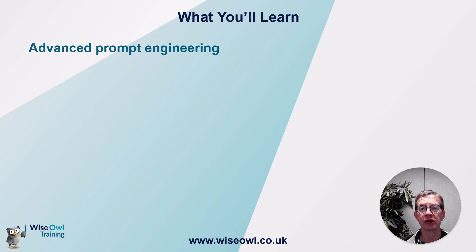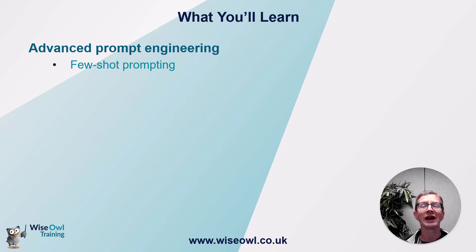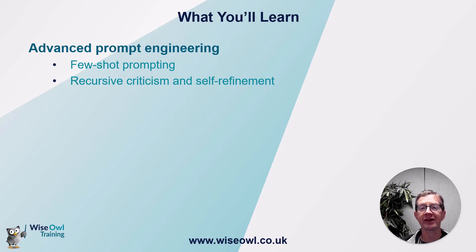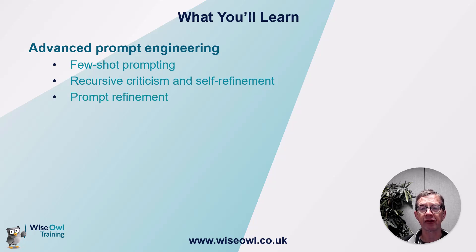Here's what you'll learn during this tutorial — three things. Firstly, something called few-shot prompting, which is a process of giving some examples to an AI tool and letting it infer from those examples how it should reply. We'll then look at recursive criticism and self-refinement, which is basically the process of getting an AI tool to improve its own replies. And then we'll look at prompt refinement, which is getting an AI tool to improve the questions you ask it.